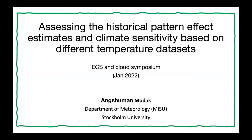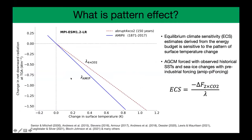Hello everyone. I'm Ankhshuman Modak from Stockholm University. I'll be talking about assessing the historical pattern effect estimates and climate sensitivity based on different temperature data sets. Equilibrium climate sensitivity estimates derived from energy budget are sensitive to the pattern of surface temperature change. The ECS from the historical energy budget is found to understate the true ECS, because the equilibrium surface warming pattern is different from the historical surface warming pattern.